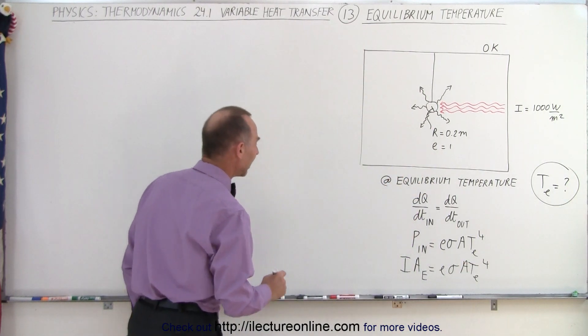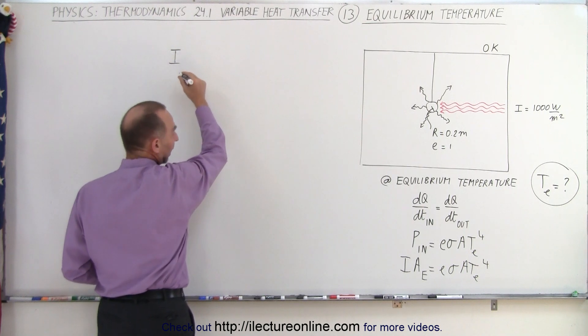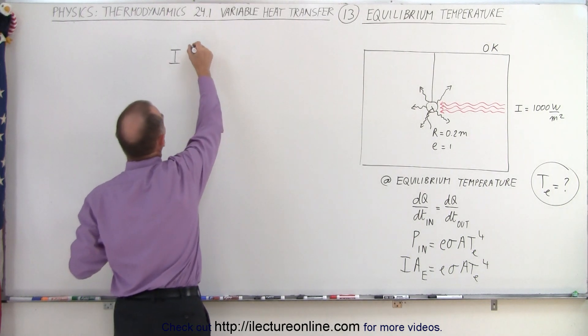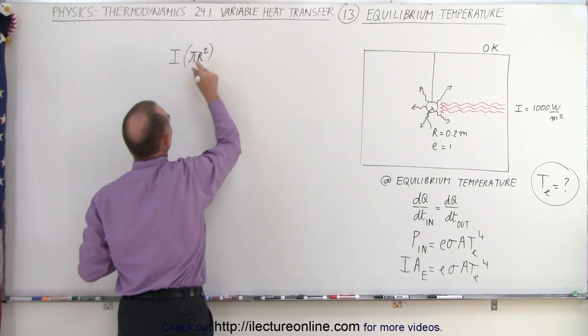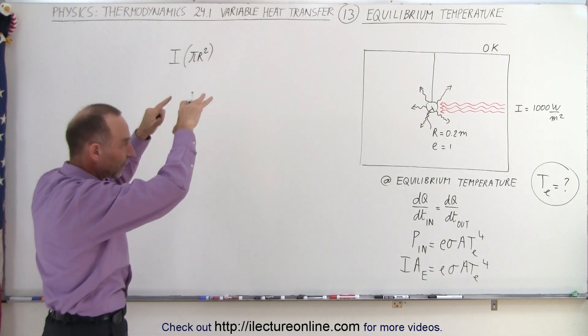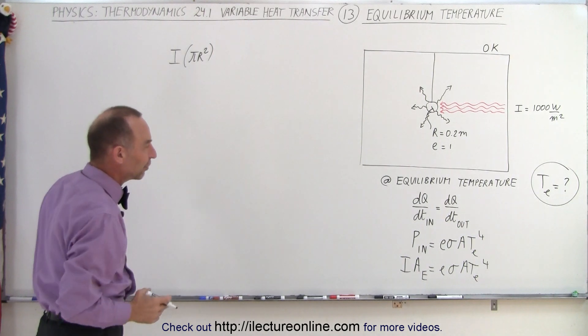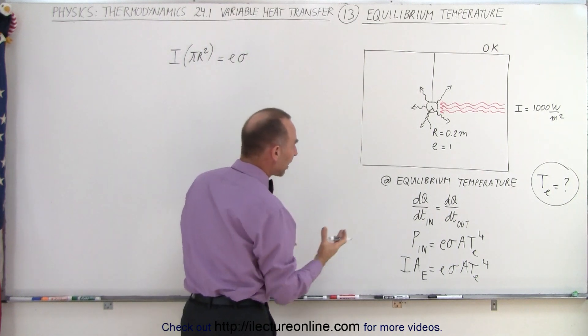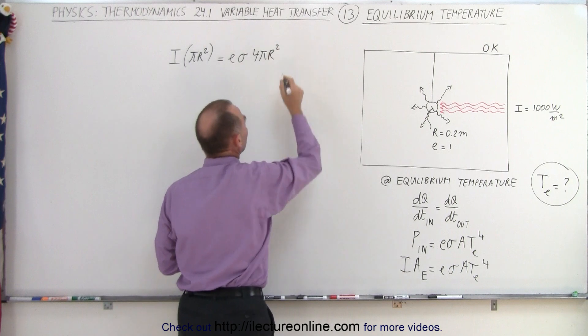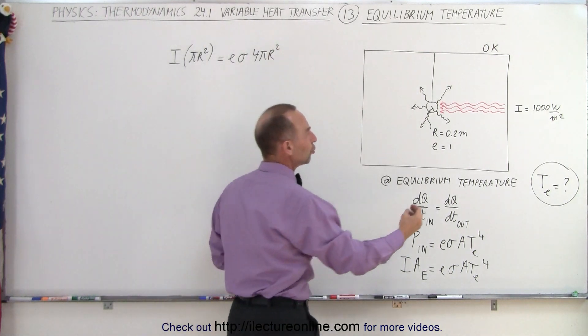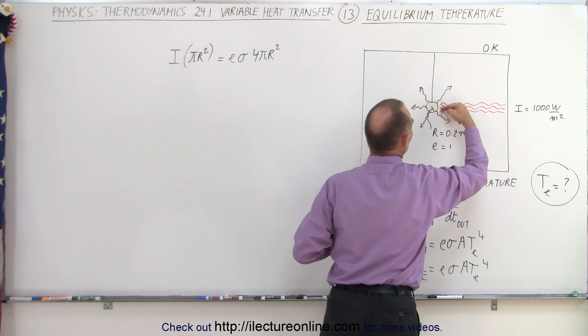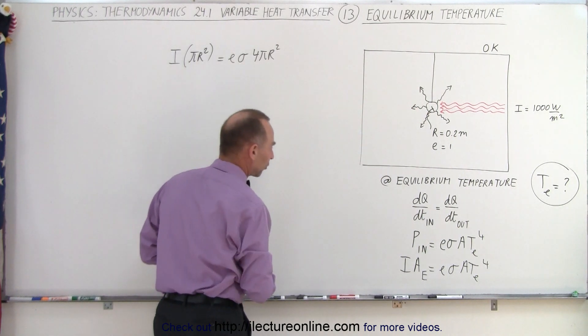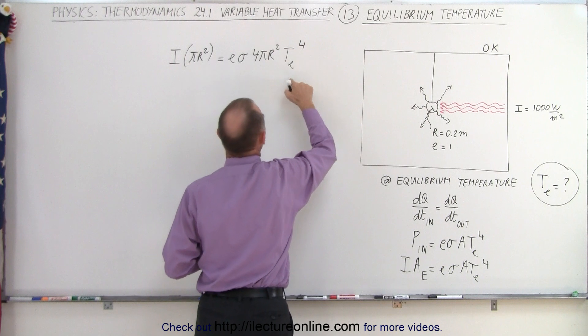So I times the effective area. The effective area would be the cross-section of the sphere. That would be pi R squared, not the 2 pi R we would expect of the complete surface of half a sphere. That equals E times sigma times the area of the entire sphere. That would be 4 pi R squared because it's going to be radiated in all directions. We assume that this source here is just a very small region of the entire enclosure, so we can simply say 4 pi R squared times the temperature equilibrium.